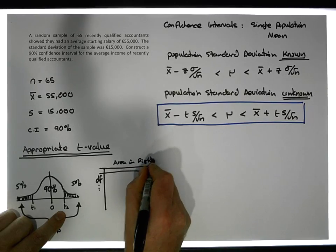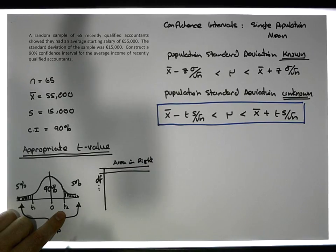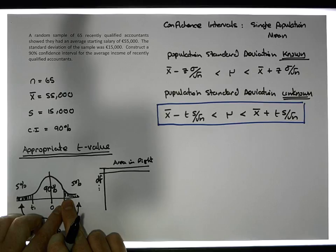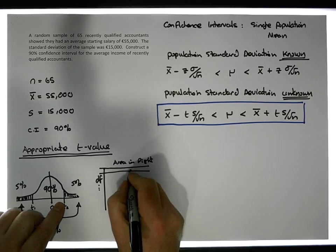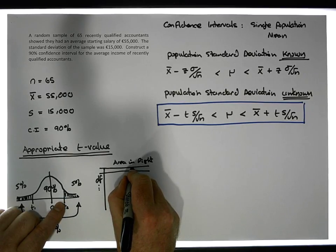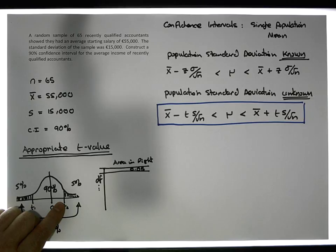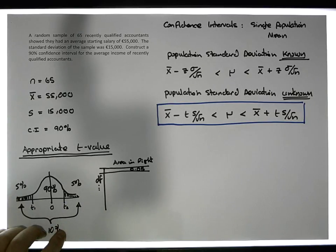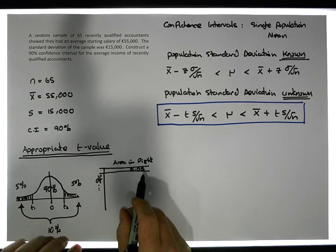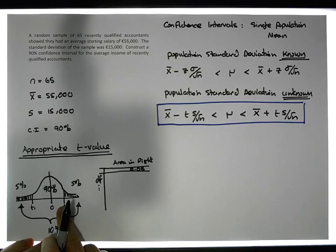The amount of area in the right tail is five percent or 0.05. We have tables that give us these particular critical values for the amount of area that we've put in the right tail. Just keep in mind that our degrees of freedom for a t-test is the sample size minus one.